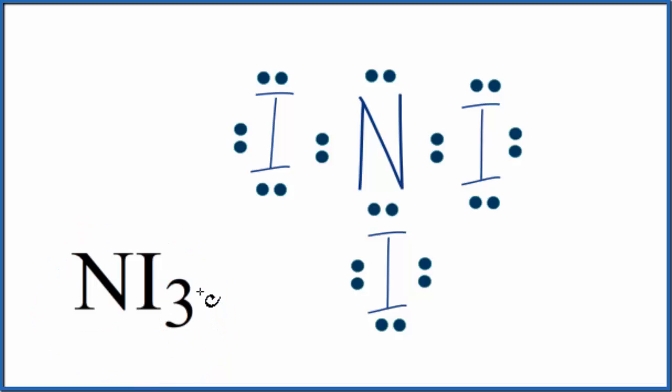So the first thing we want to do when we look at the molecular geometry, we need a Lewis structure. So this is the Lewis structure for NI3. If you need help, there's a link in the description how to draw the Lewis structure here.